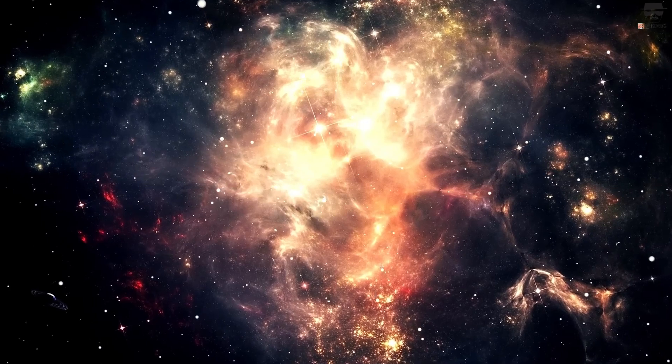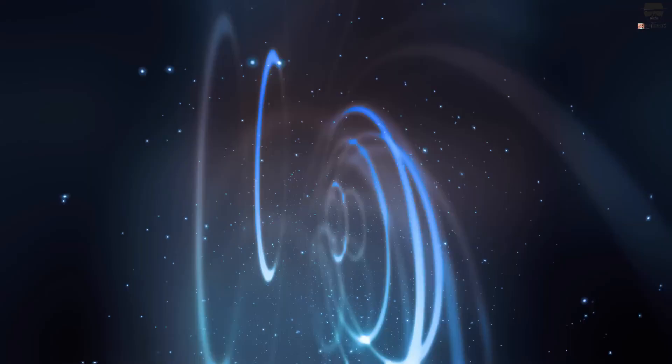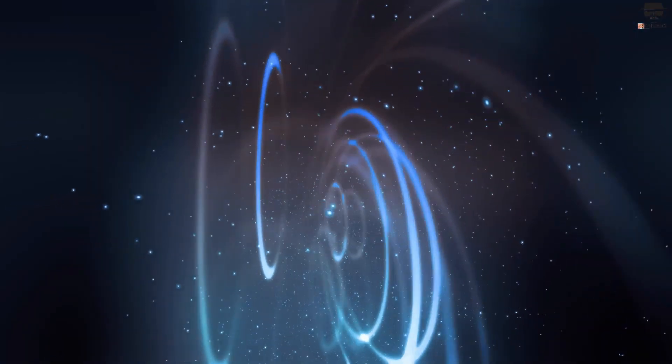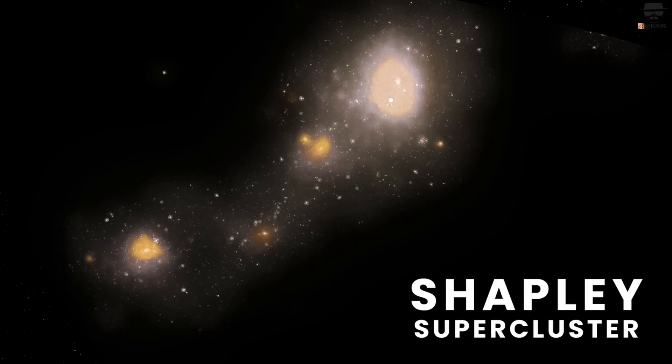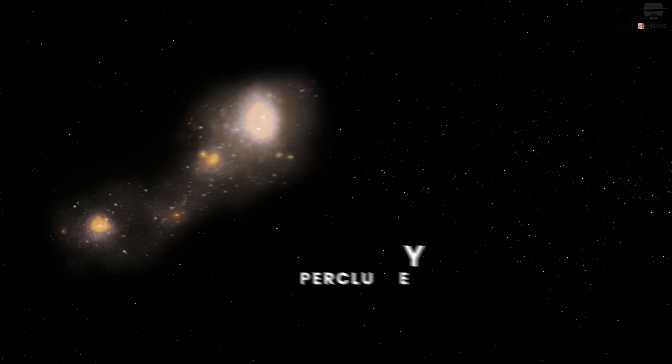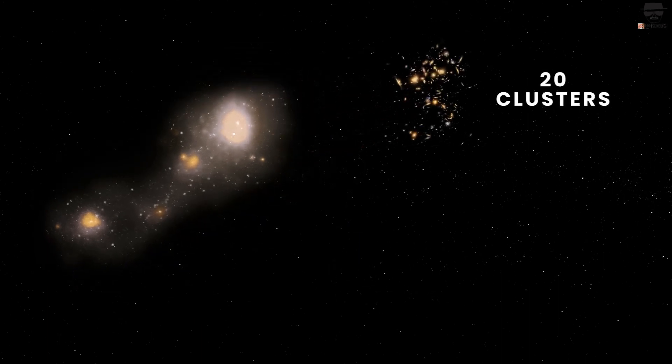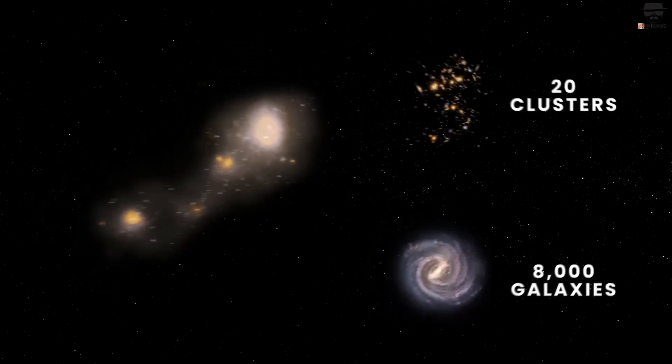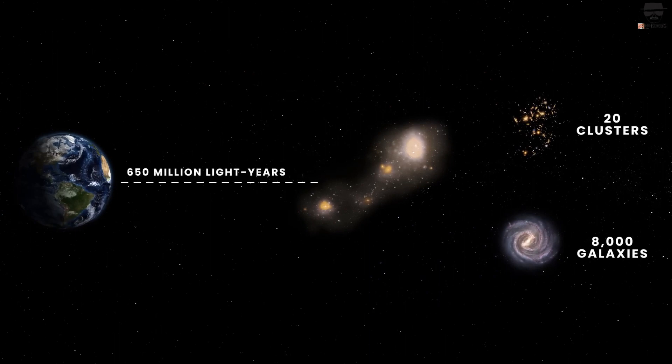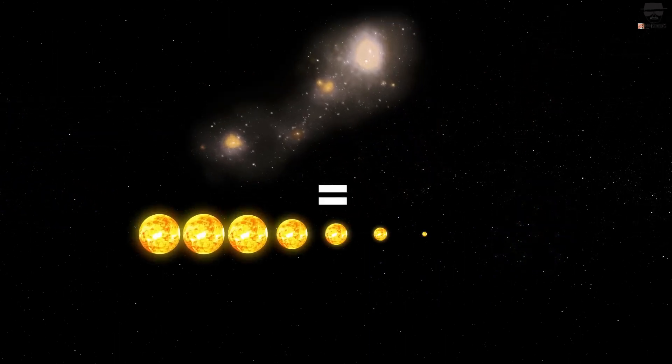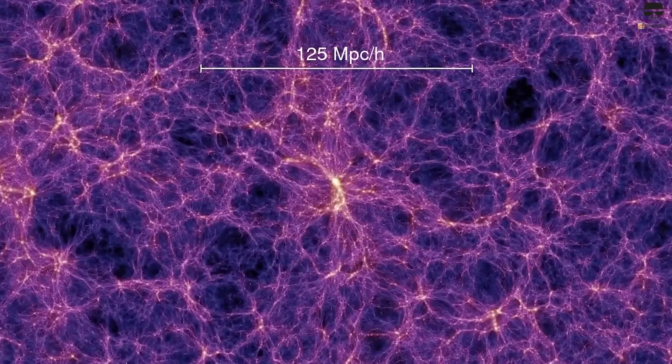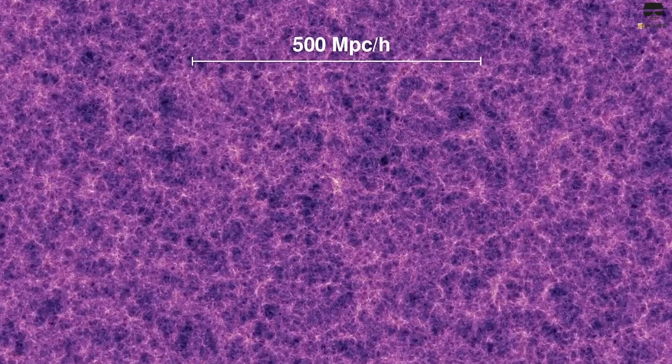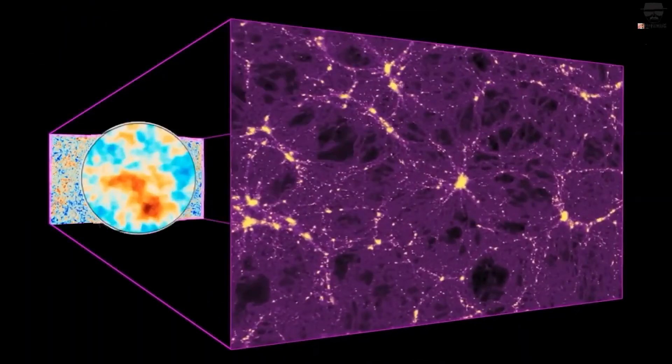If we look at an even larger region of galaxies, we find that the local galaxies and the large attractor are moving towards something even larger. It is known as the Shapley Supercluster. It consists of more than 8,000 galaxies and has a mass of more than 10 million billion suns. In fact, the Shapley Supercluster is the most massive cluster of galaxies within a billion light-years. And we and every galaxy in our corner of the universe are moving towards it.